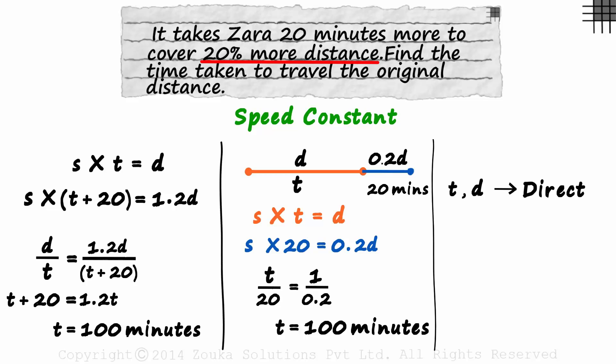We are talking about 20% more distance, so the overall distance is multiplied by 1.2. As T varies directly with D, we will also have to multiply T with 1.2. This is the new time Zara takes to travel 20% more distance. And to travel the original distance, she takes T units of time. Now understand this really well. The fact that she takes 20 minutes more implies that the difference between this time and the original time will be 20 minutes.